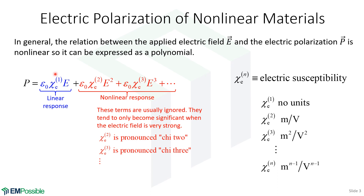For the linear response we have χ1, which is just the electric susceptibility. For the nonlinear response we have χ2, χ3, and so on — χ2 and χ3 are the most commonly discussed. Looking at units: χ1 has no units, χ2 has units of meters per volt, χ3 has units of meters squared per volt squared, and so on. That's how we describe nonlinear materials.